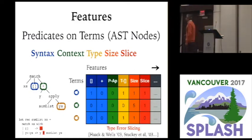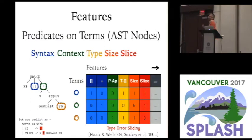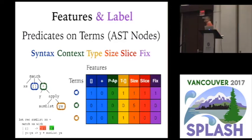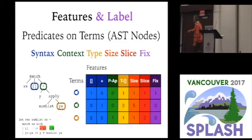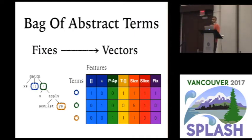We found one particular feature to be extremely important: the type error slice. Think of it as: if you have a type error, what is the subset of locations that somehow participate in the type error? The nil and the plus belong in the slice, while the y's does not, so we can throw it away. Finally, the last thing we need is a label telling us whether this node was actually part of the fix. In this case, the user changed the nil to a zero, so we label that blue circle vector with one and everybody else with zero.